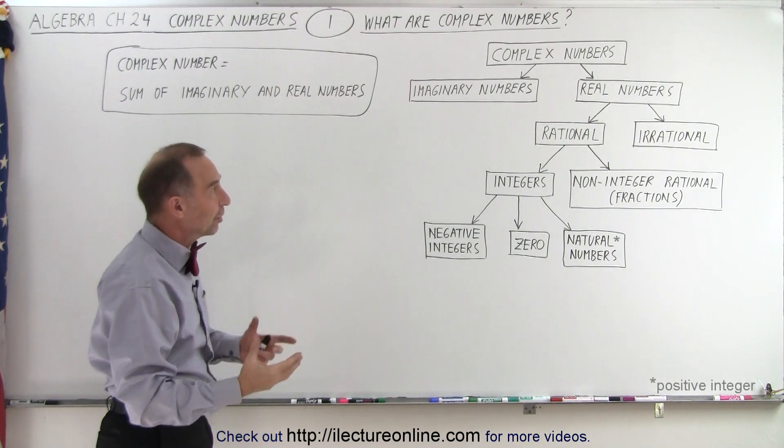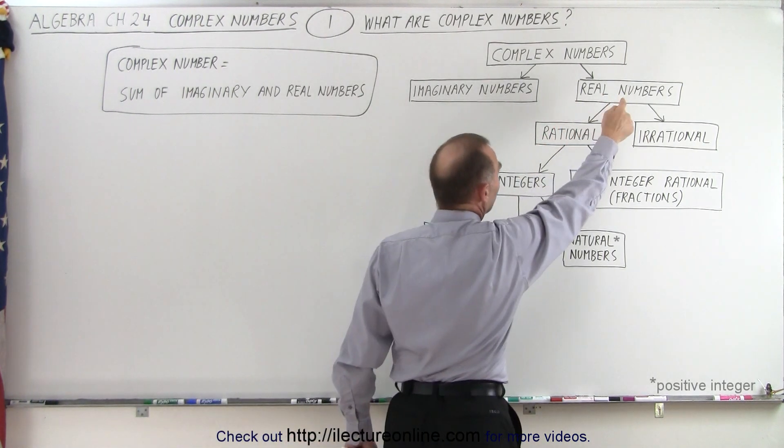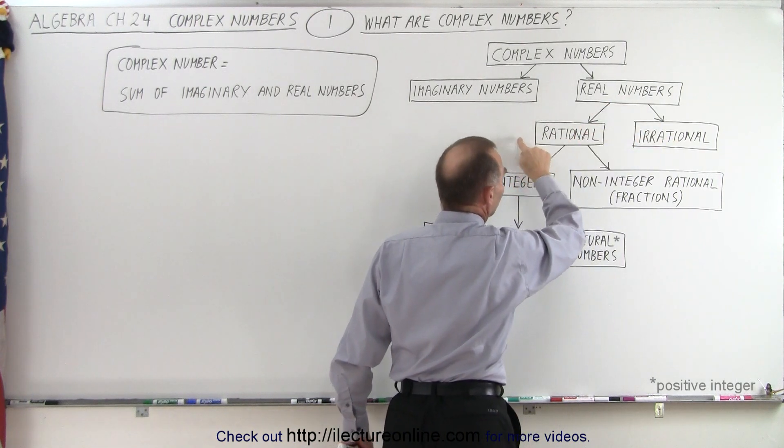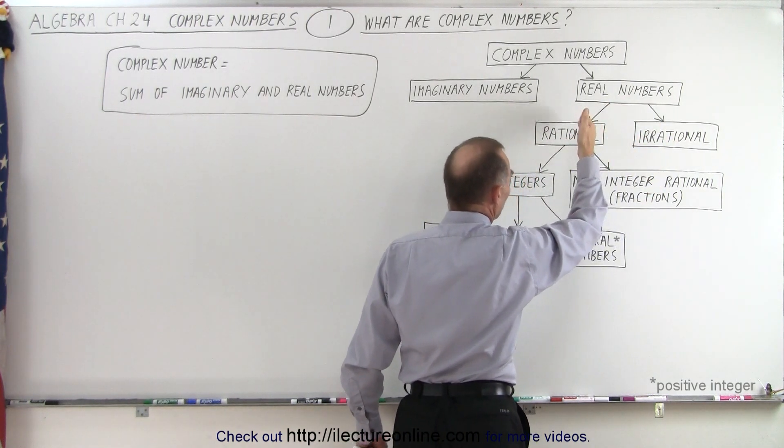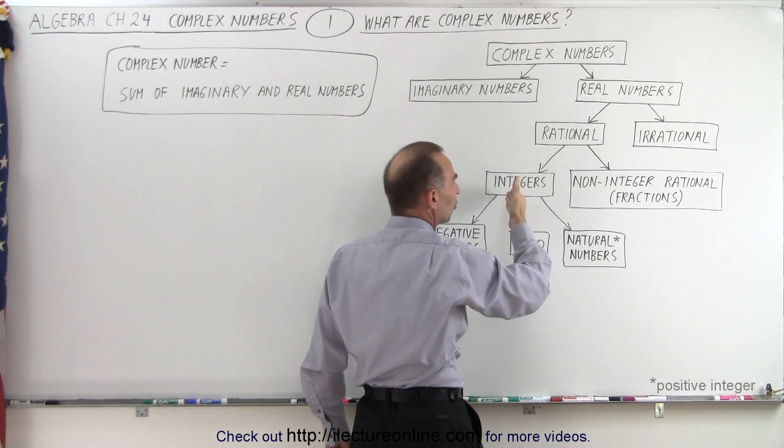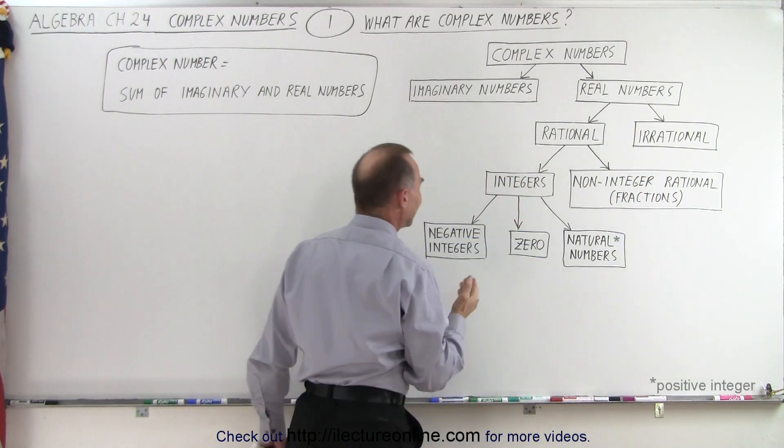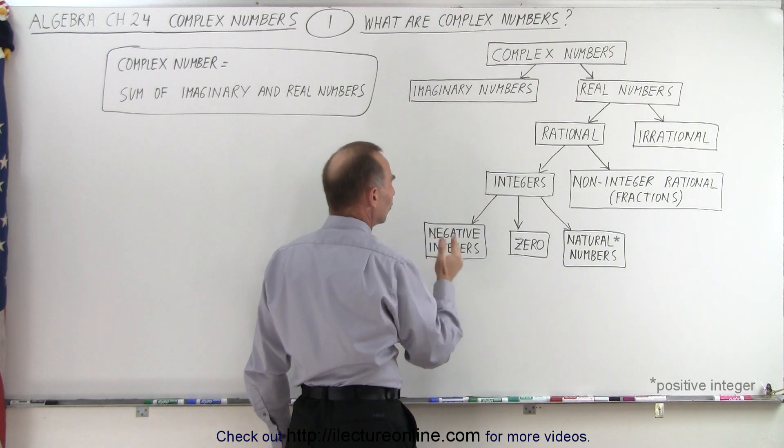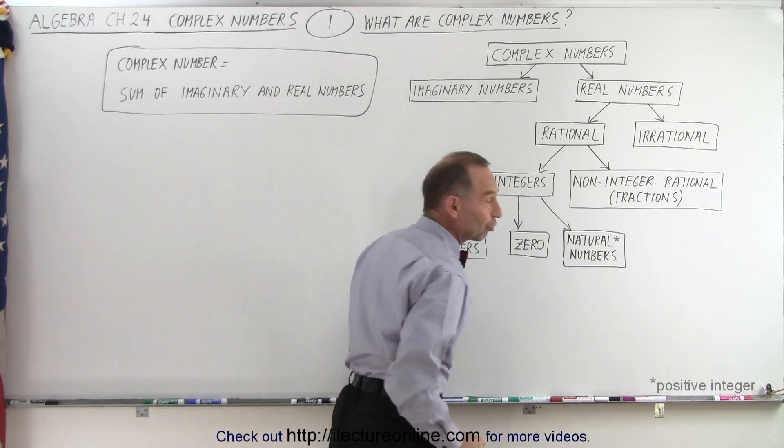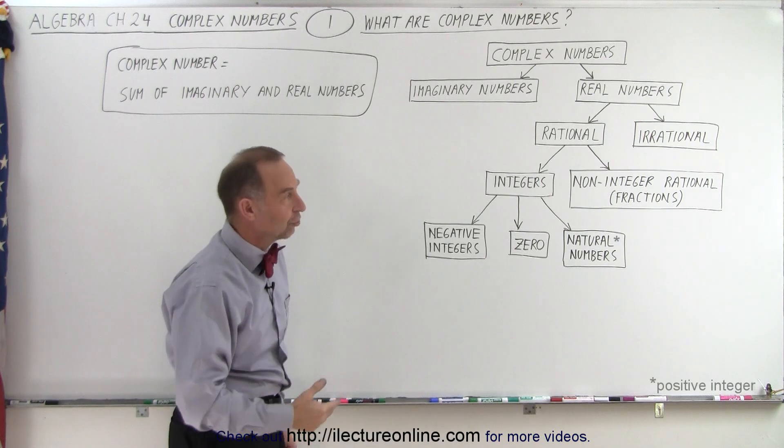Now we have seen the other numbers. We've seen the real number system that divides into rational and irrational numbers. The rational numbers are then divided into integers and non-integer rational numbers, essentially fractions. And then the integers are divided into negative integers, the number zero, and the natural numbers, which are all positive integers.